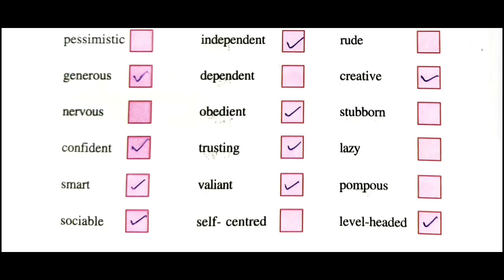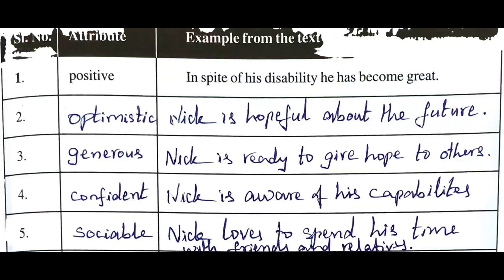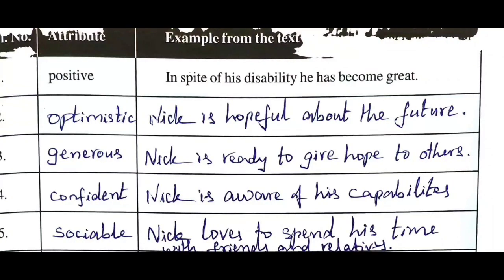Now there is another exercise. Some attributes related to Nick have been listed - positive qualities. You need to write sentences from the reading text related to these attributes. The first example is done for you - it's a positive quality. For instance: 'In spite of his disability, he has become great' - this shows Nick's positive nature. Another example: for the attribute 'optimistic,' Nick is hopeful about the future.